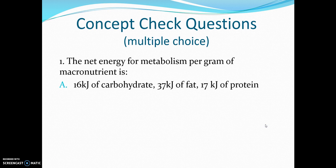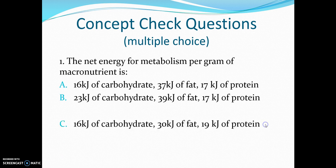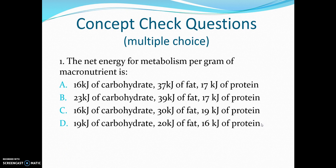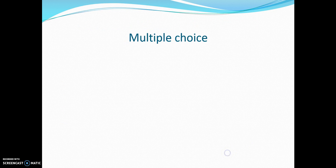Multiple choice question one: the net energy for metabolism per gram of macronutrient is — read through options A, B, C, or D and write down your answer. The correct answer is A: 16 kilojoules per gram for carbohydrates, 37 for fat, and 17 for protein.